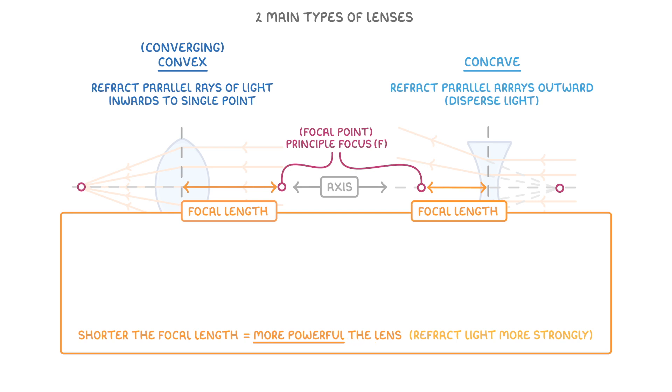In order to make a lens more powerful, we need to either make it more curved, or use a different material that naturally refracts light more strongly.